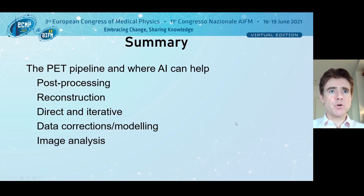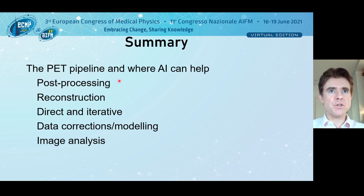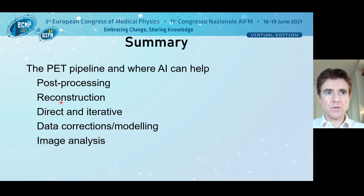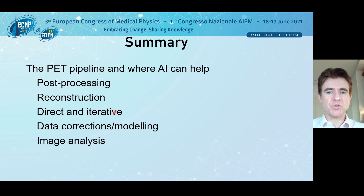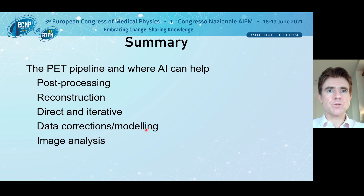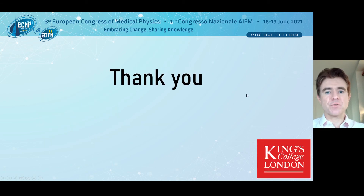To summarize, I've gone through the PET pipeline and given examples of where AI can help: for post-processing using convolutional neural networks; reconstruction, giving the example of Haagstrom for the direct method and the unrolled iterative methods where we put CNNs inside iterative reconstruction; I've covered data corrections; and then touched on image analysis. Thanks for listening.